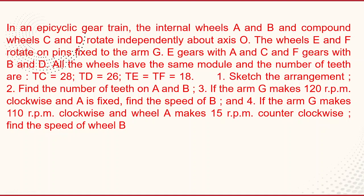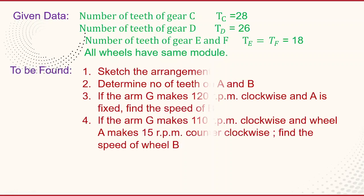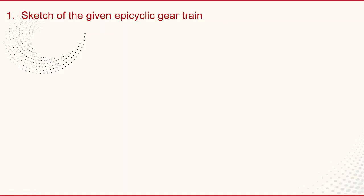First of all, draw the diagram using the given information. This problem may be solved by using the tabular method. First we will sketch the given epicyclic gear train. Gear wheels A and B are annular wheels, and C and D are compound wheels. All four are having the same axis at O. The given data: number of teeth of gear C is 28, gear D is 26, gear E and F are 18, and all wheels have the same module.